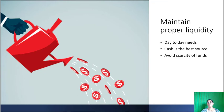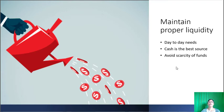Maintain proper liquidity: Every concern is required to maintain liquidity for meeting its day-to-day needs. Cash is the best source for maintaining liquidity. It is required to purchase raw materials, pay the workers, and meet other expenses. A finance manager is required to determine the need for liquid assets and then arrange liquid assets in such a way that there is no scarcity of funds. The right amount in right quantities is to be arranged so that funds do not go idle and there is no shortage of funds to meet day-to-day expenses.